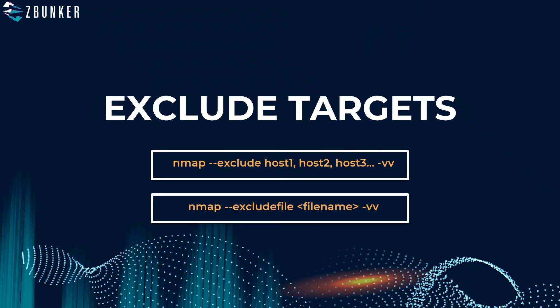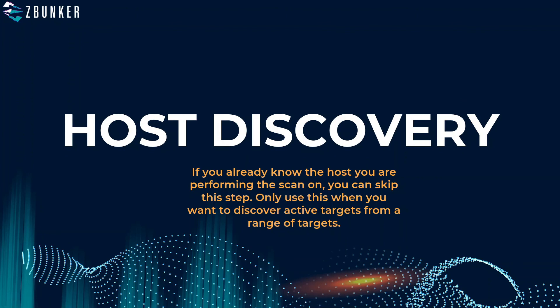You can also exclude targets using 'nmap --exclude [host1] [host2]'. You can also pass in a file to exclude multiple targets. This is useful when scanning a range like 10.0.2.1 to 10.0.2.255 and you want to skip a particular host — either because you don't want to scan it or you already know it's up. That was target specification. From the next video we'll cover host discovery, which will be a really awesome topic.